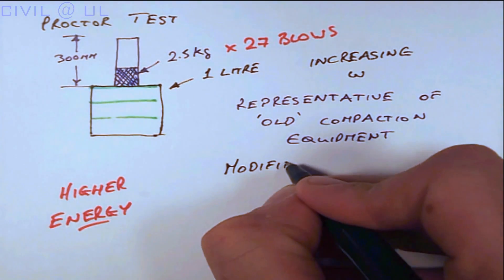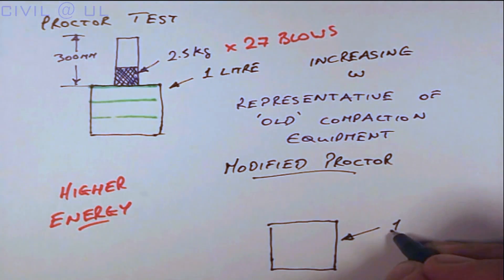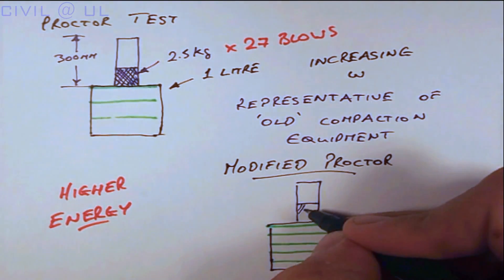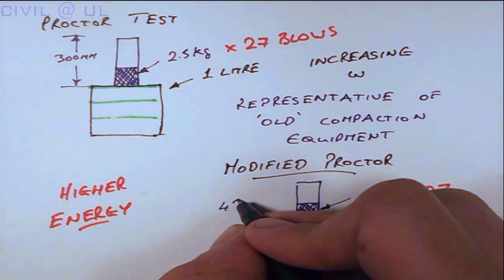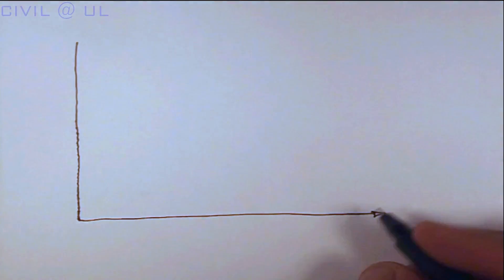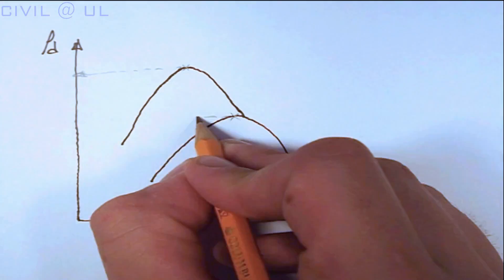The modified Proctor or heavy compaction test involves the use of the same mould but this time the soil is compacted in 5 layers with 27 blows per layer using a 4.5 kg rammer that falls to a height of 450 mm. The implication of higher compaction energy is to increase the maximum dry density above that achieved using the standard Proctor test.